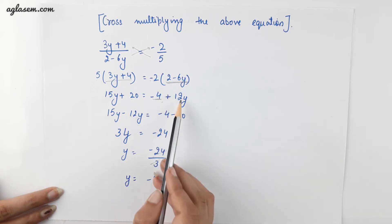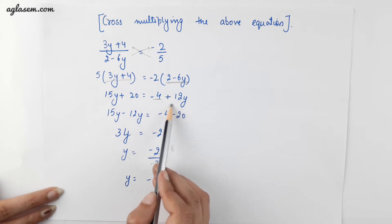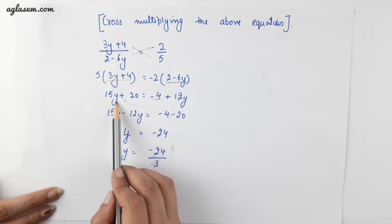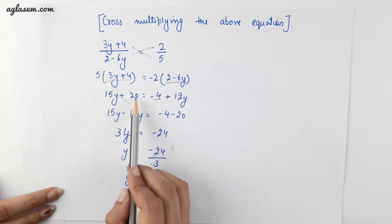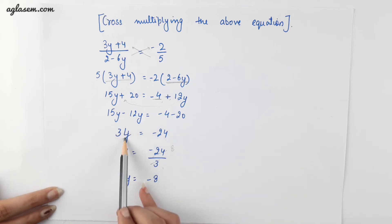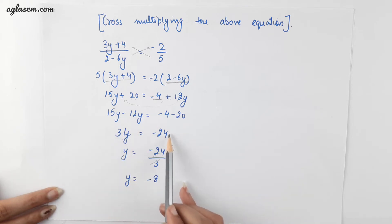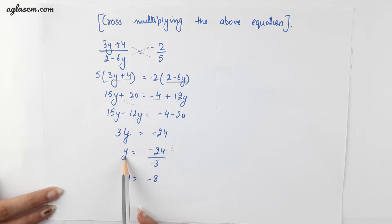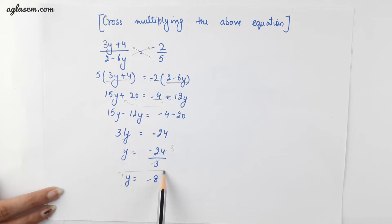Now moving all the variable terms to one side and the constant terms to the other side, we will get 3y is equal to minus 24. Therefore the value of y is minus 8.